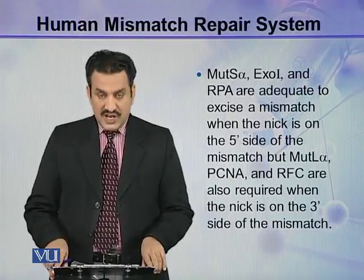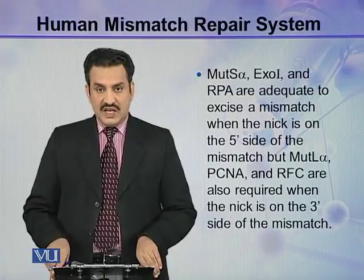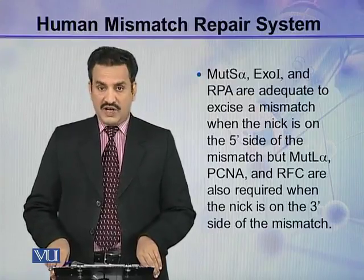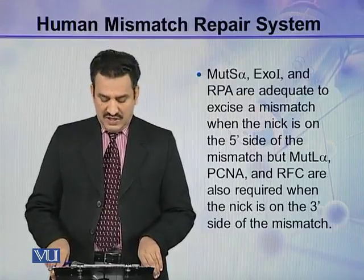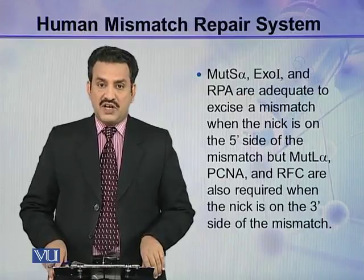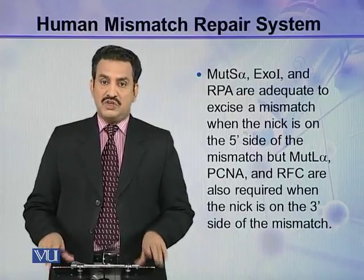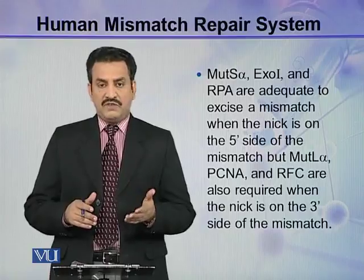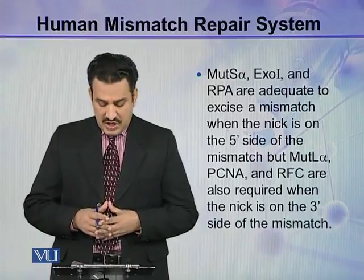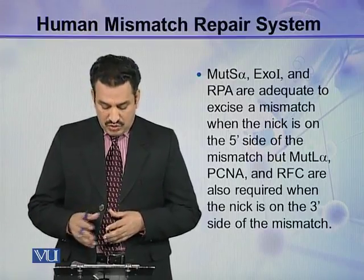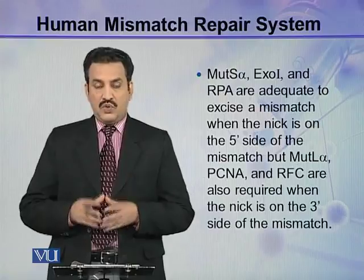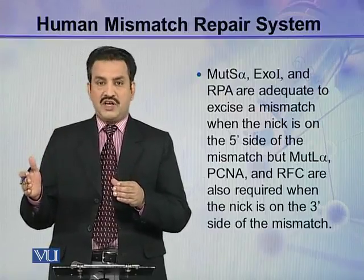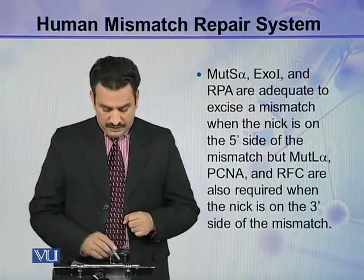While MutL-alpha, PCNA, and RFC are also required when the NIC is on the 3' side of the mismatch. So in addition to the above three factors, these three more factors are required when the NIC is on the 3' side of the mismatch.